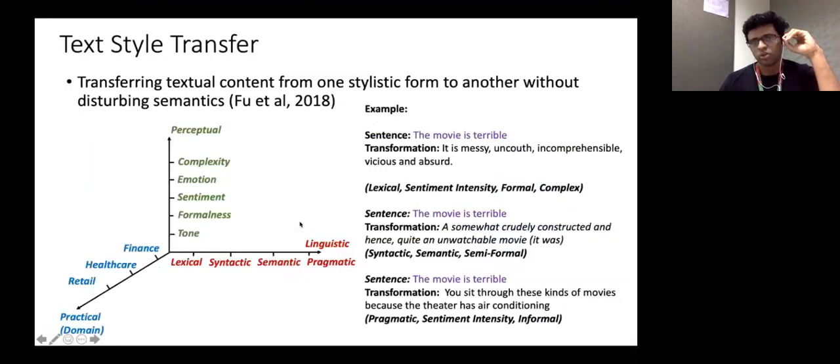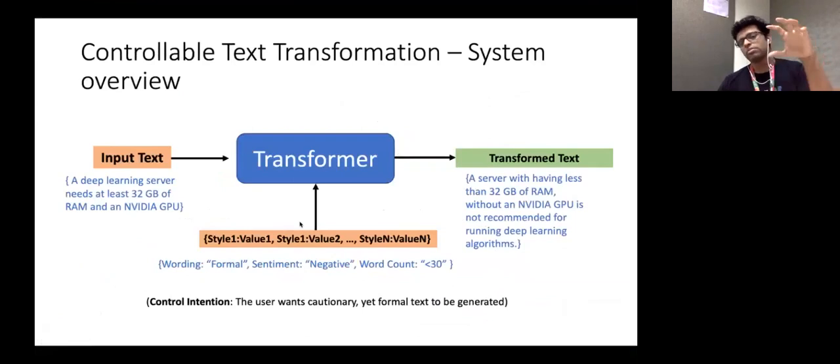Right. So controllable text transformation, the system view is like this. So you have an input text, and you would like to transform it into another version. And you should have power over controlling the system. For example, you could have control specifications in terms of wording, sentiment, word count, formalness, politeness, etc. You should be able to provide these things as input at runtime. And based on the inputs along with the text, the system should be able to produce a transformed version of the text.